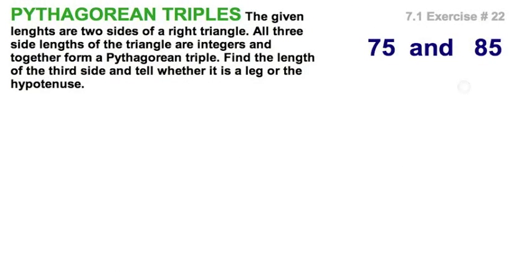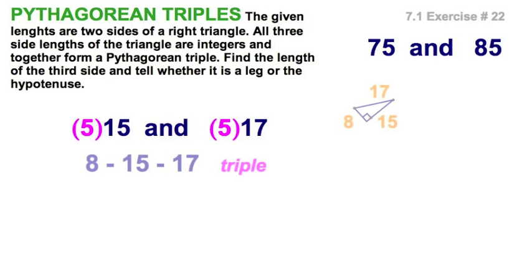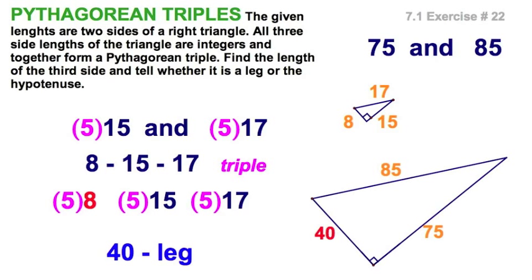Okay, one more of these. 75 and 85. Well, right away, I can see a common factor of 5 there. And there you go. 8, 15, 17 triangle. One that you're expected to know. And of course, restoring that factor of 5, the missing side is the 40, or is 8 times 5.